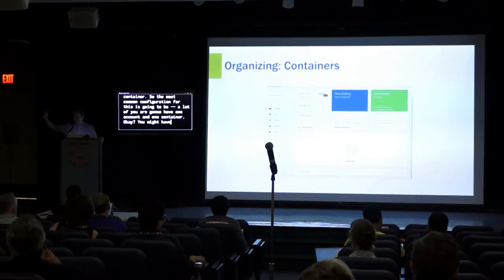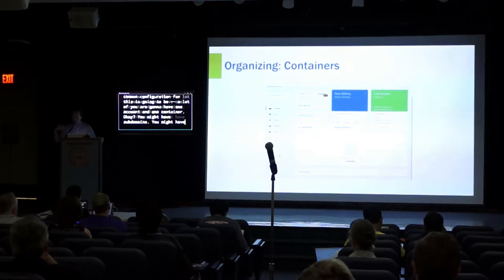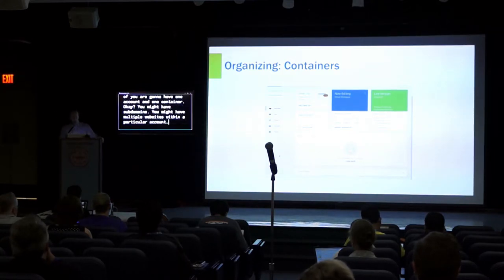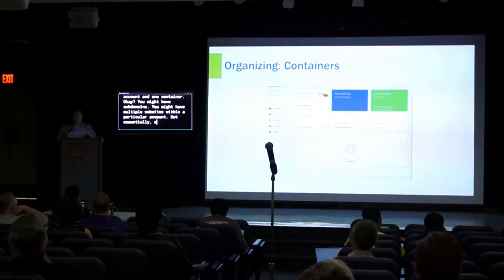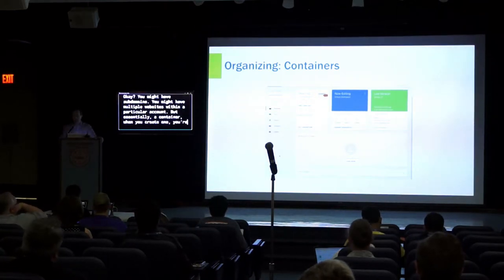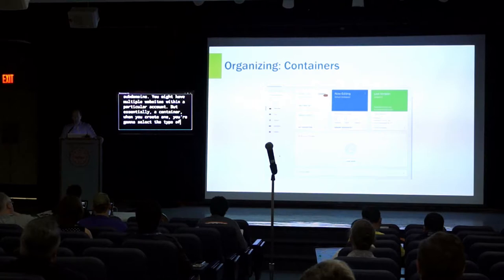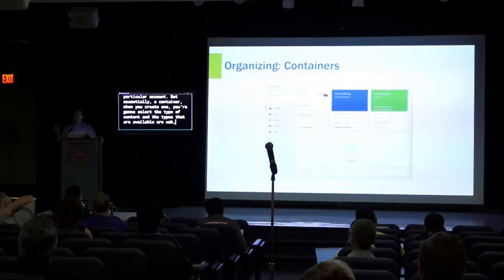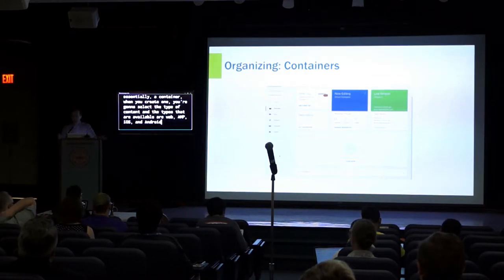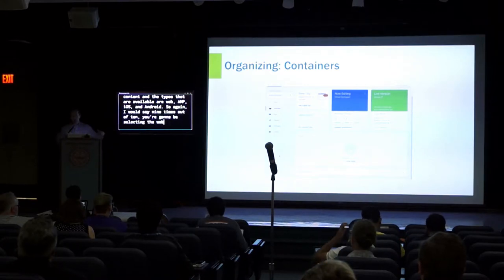You might have subdomains or multiple websites within a particular account. Essentially, when you create a container, you select the type of content — the types available are web, AMP, iOS, and Android. Nine times out of ten, you're going to be selecting the web container type, which is really what I'm focusing on in this presentation. So you have one container per website.